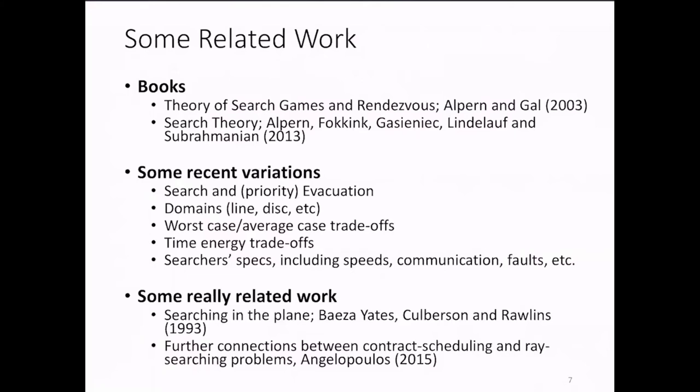This is where it was conjectured that monotone algorithms are optimal for probabilistically faulty robots searching the line, or in other words, for searching two rays, whereas we study the half-line, which is one ray.